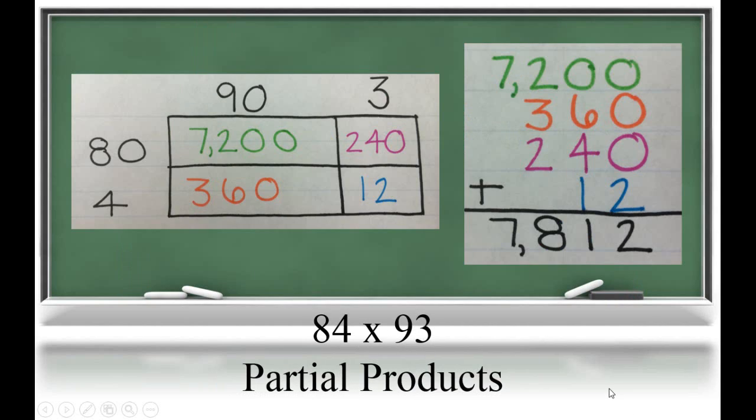Now we'll move to partial products. Again, partial products is breaking apart the numbers. So you'll see our model looks very similar to the model for distributive property. The difference between partial products and distributive property is students record their addition more like the traditional algorithm.